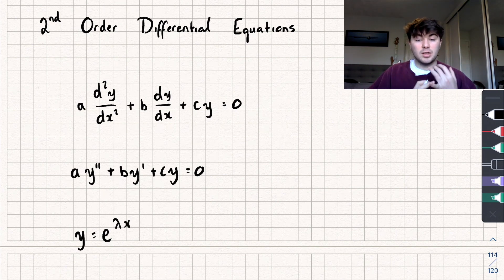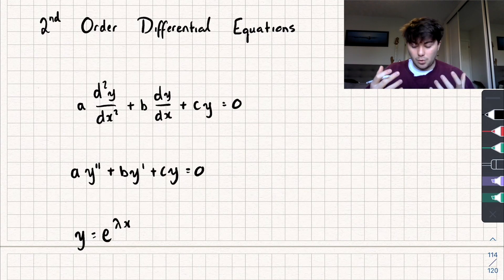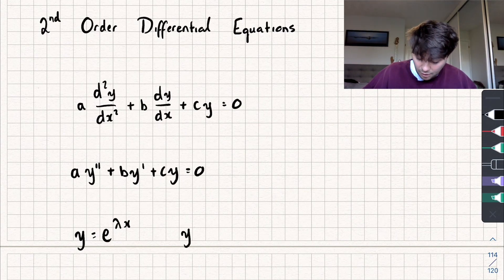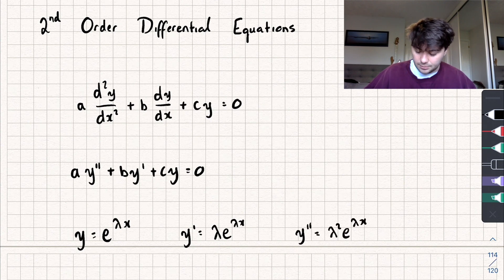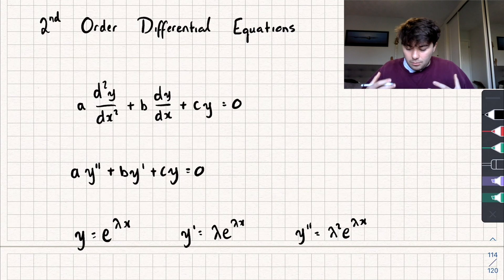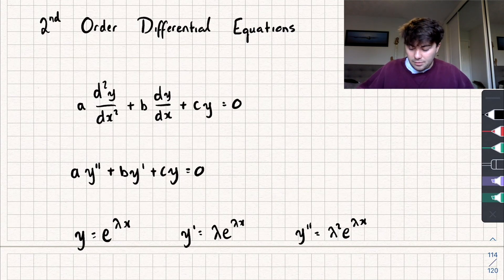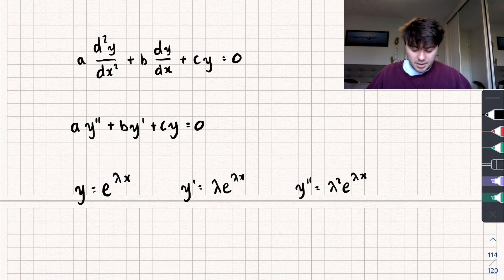If that's a solution, let's take the first derivative and the second derivative, substitute them into our differential equation, and see what happens. Our first derivative is going to be equal to λe^(λx), and our second derivative is going to be equal to λ²e^(λx). You can verify that yourself using the chain rule.